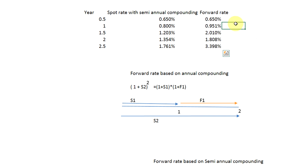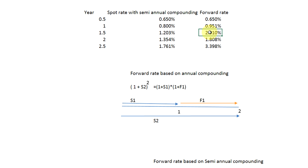Here I've calculated the forward rates for each period with semi-annual compounding. For example, this one at 18 months — this forward rate is the six-month forward rate that starts in one year's time. Because this is 18 months, the forward rate covers the six-month period starting at month 12. To calculate this, you only need the 18-month spot rate and the one-year spot rate. Let's see how.